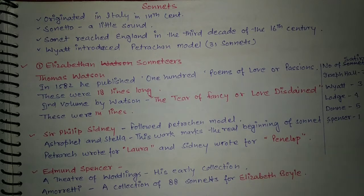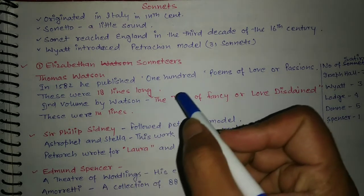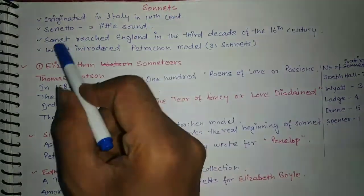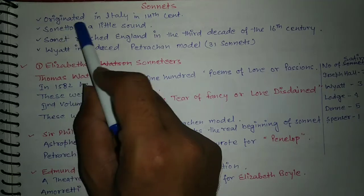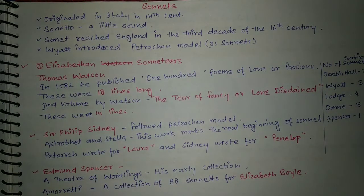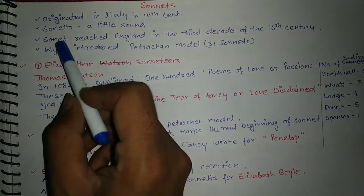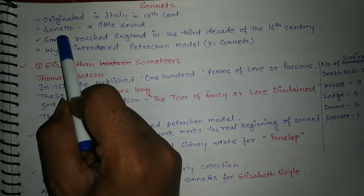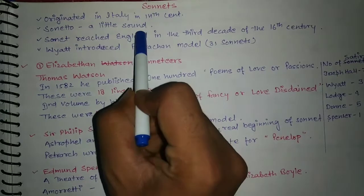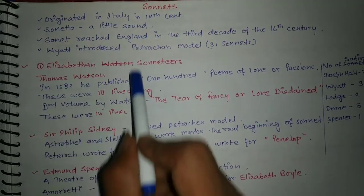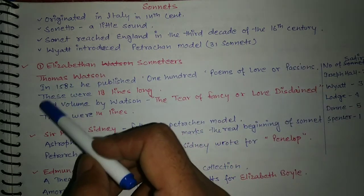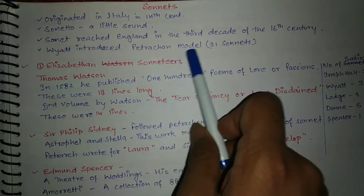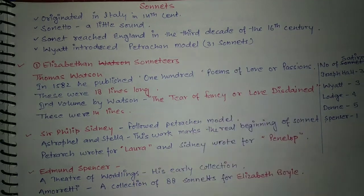In poetry, the important form is the sonnet. It originated in Italy in the 14th century, coming from the word 'sonetto,' meaning a little sound. The sonnet reached England in the third decade of the 16th century, and Wyatt introduced the Petrarchan model — he wrote 31 sonnets.